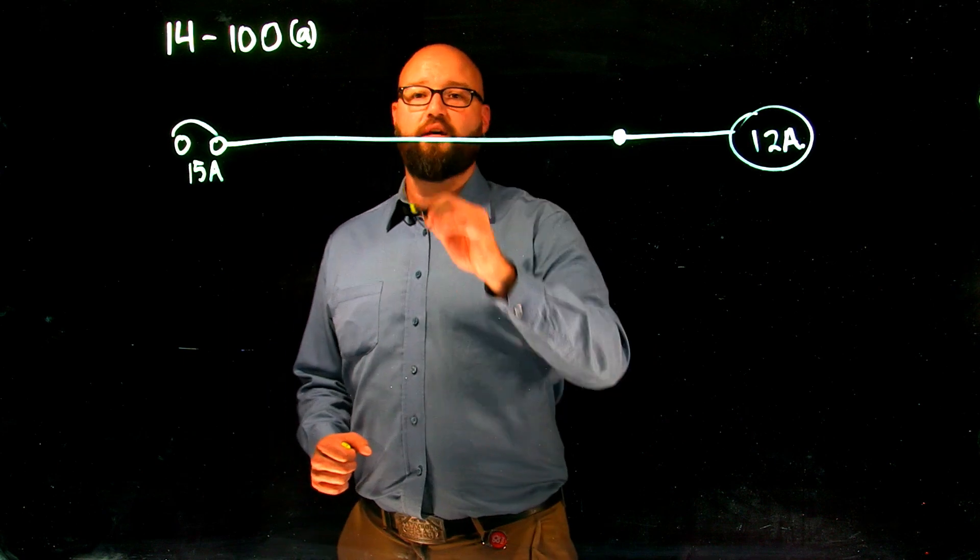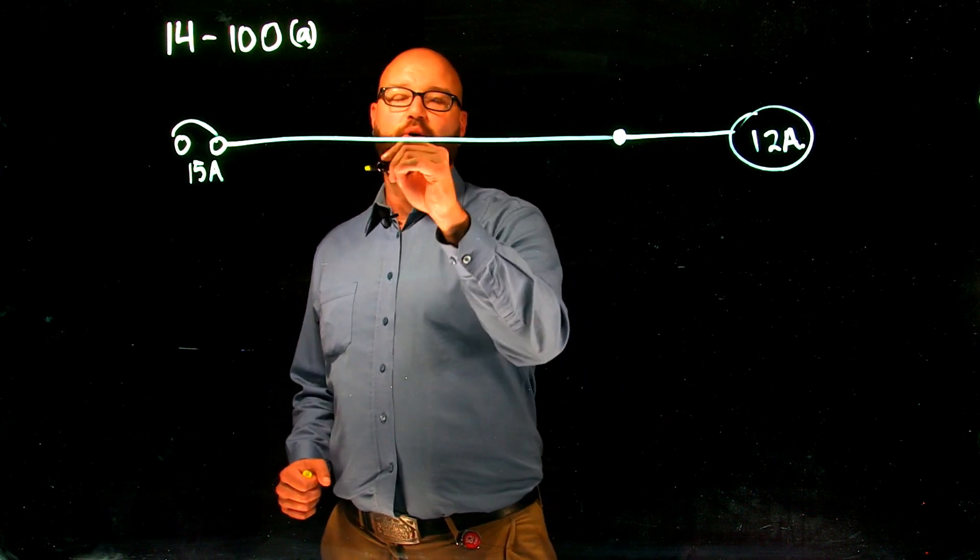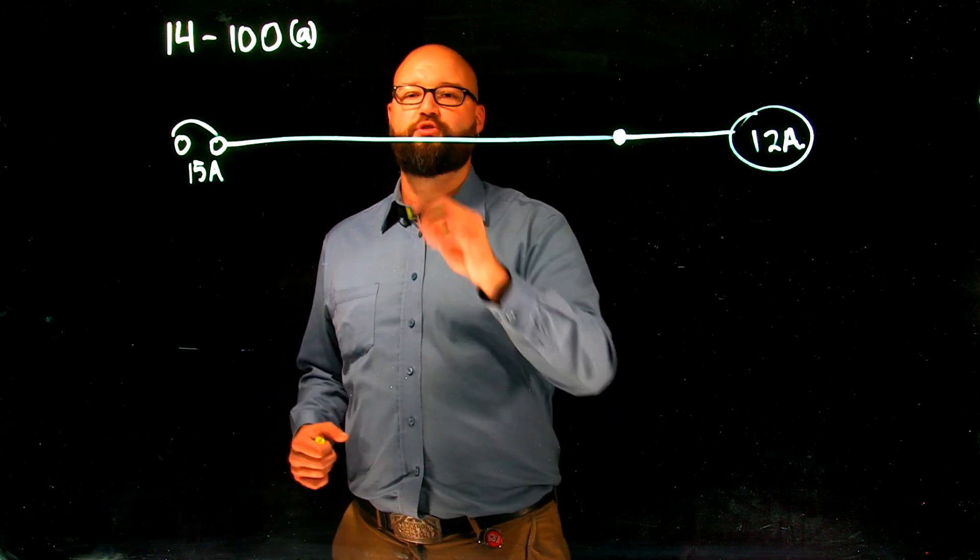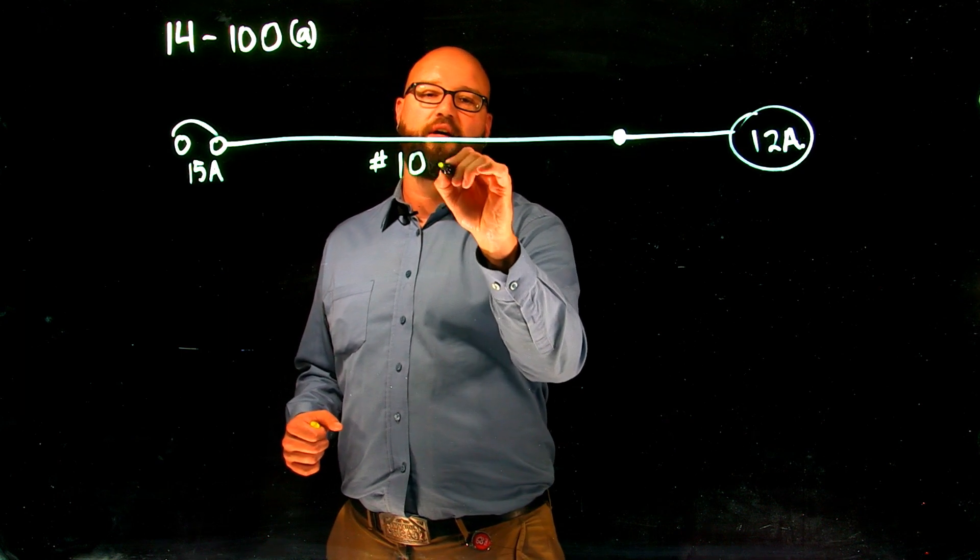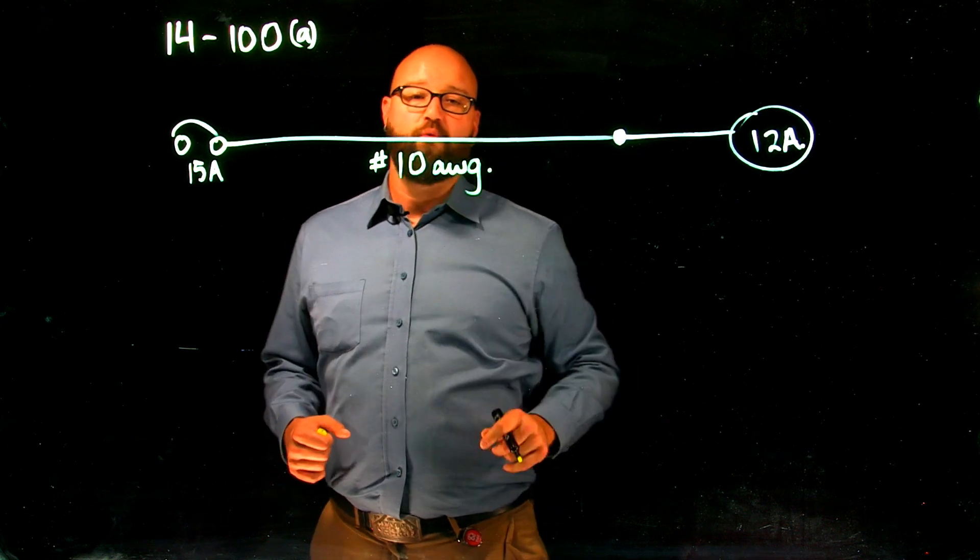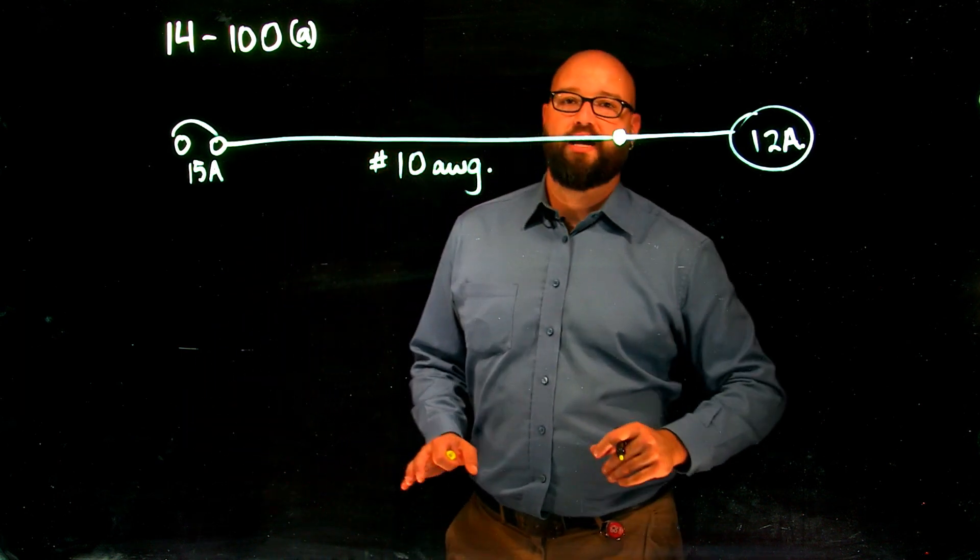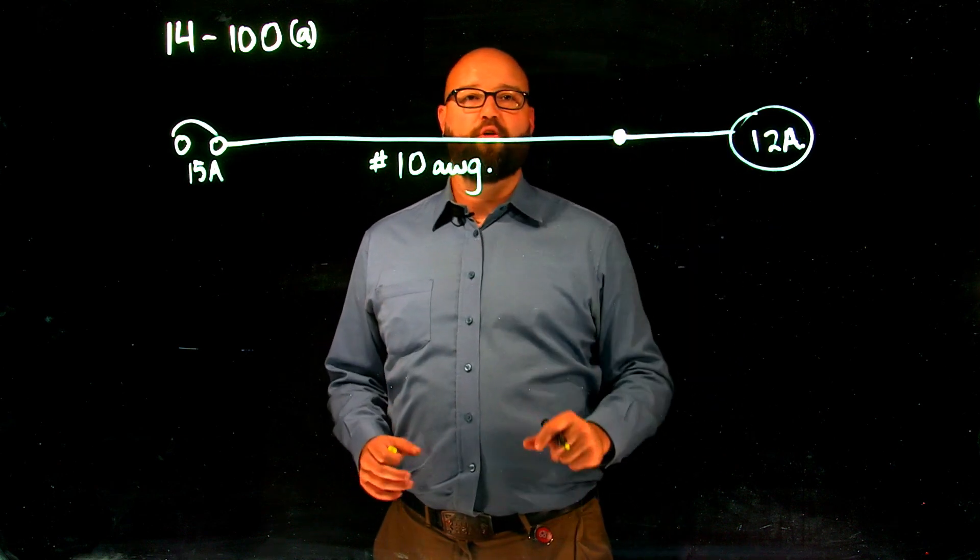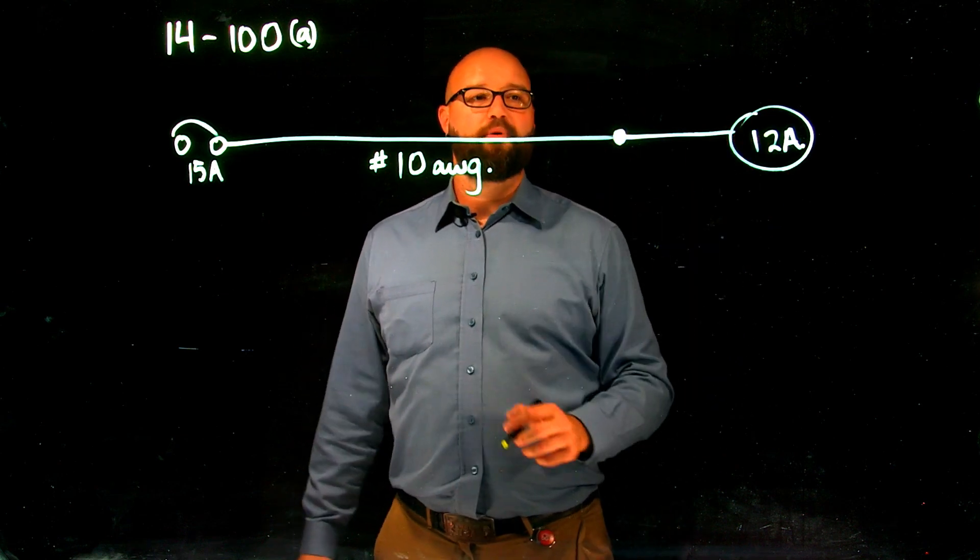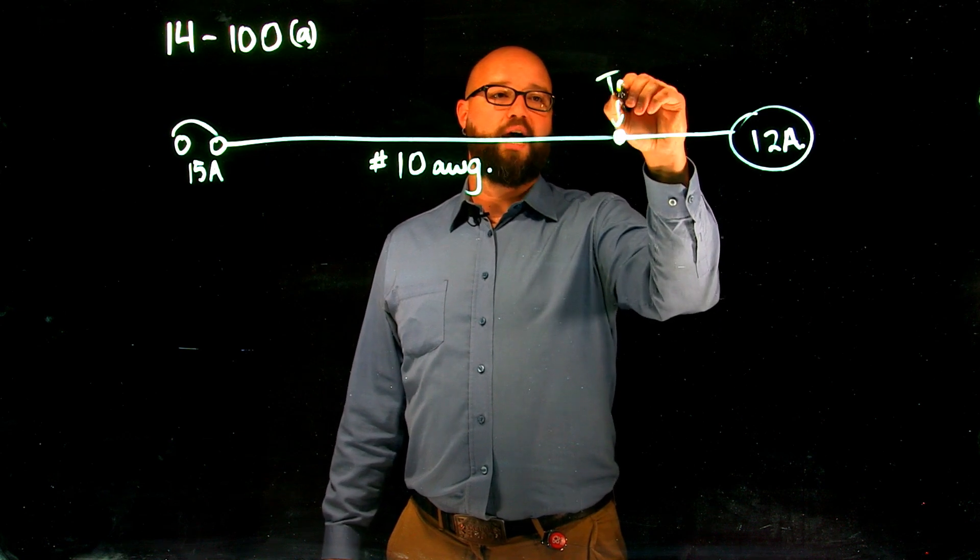We're going to run with a 15 amp overcurrent to protect our load. Ideally our conductor—to get away from the whole voltage drop thing—we're going to run a number 10 conductor, a number 10 AWG, which has more than sufficient ampacity to handle the 12 amp load. We're doing this for voltage drop. At this point here, this is what we're going to call our tap.